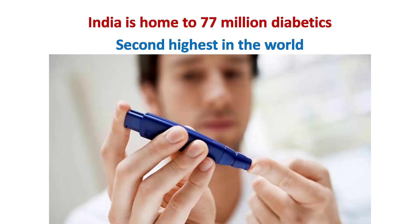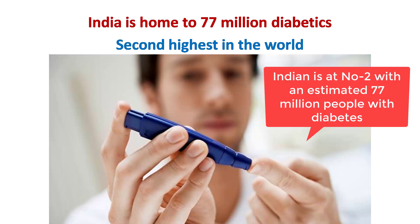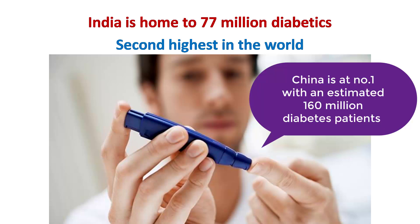One in six people with diabetes in the world is from India. The numbers place the country among the top 10 countries for people with diabetes, and India is at number 2 with an estimated 77 million people with diabetes. China leads at number 1 with over 160 million people with diabetes.